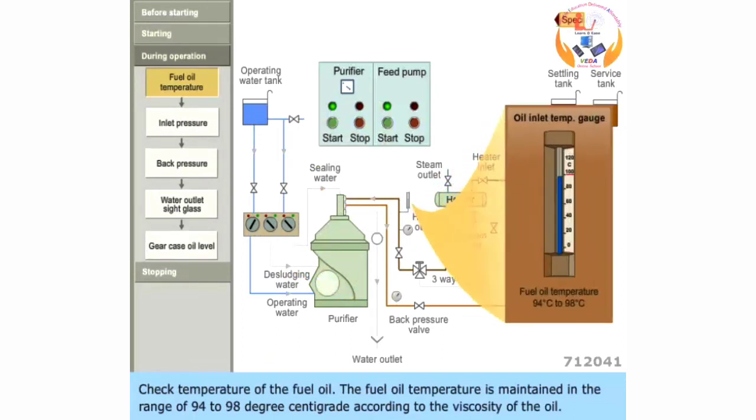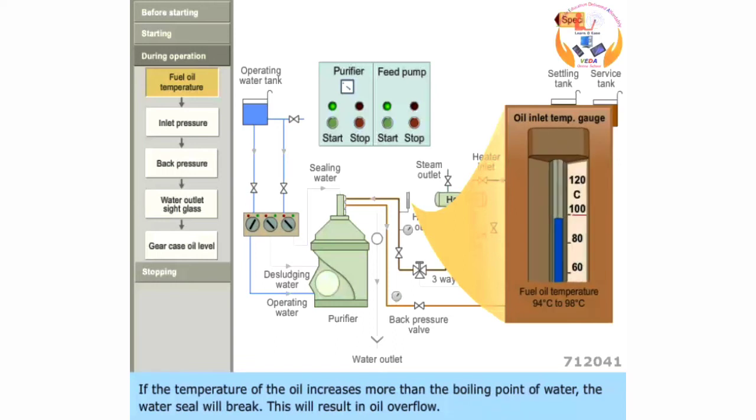Check temperature of the fuel oil. The fuel oil temperature is maintained in the range of 94 to 98 degrees centigrade according to the viscosity of the oil. If the temperature of the oil increases more than the boiling point of water, the water seal will break. This will result in oil overflow.